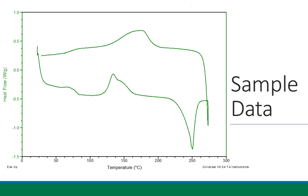In the very bottom left of the plot, you'll see the text 'exo up.' Convention dictates that you indicate which direction is exothermic when plotting DSC data. A positive or negative heat flow value isn't inherently exothermic or endothermic — it depends on the sign convention used. Some plots have the axis flipped with exothermic down. As long as you see 'exo up' on the plot, you can use that to identify which direction is exothermic.